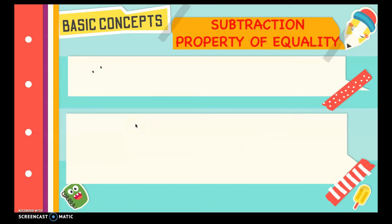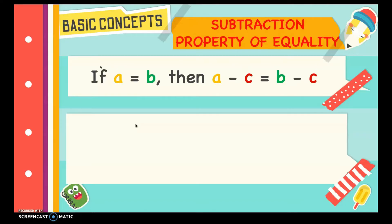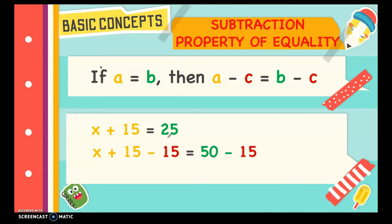We also have the Subtraction Property of Equality. If a is equal to b, then a minus c is equal to b minus c. Example: x plus 15 is equal to 25. We subtract 15 from both sides of the equation so that only x remains. When we simplify, x plus 15 minus 15 equals 25 minus 15, giving us x equals 10. We can subtract the same number from each side of an equation and the equation will not change.